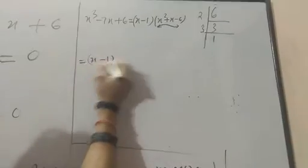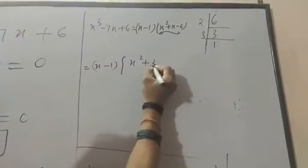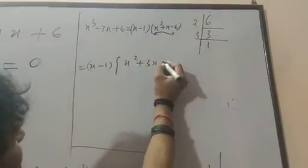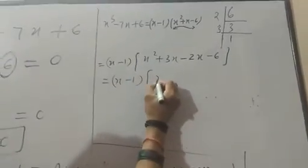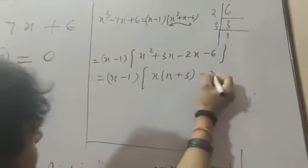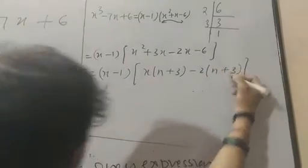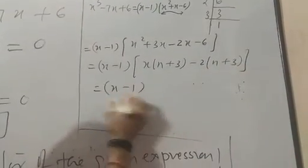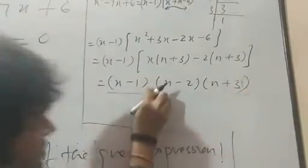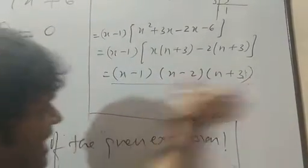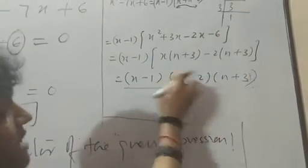Now factor this: x - 1, x² + x - 6. Make it 3x - 2x - 6. x - 1, bracket x common (x + 3), -2 common (x + 3). Final answer: (x - 1)(x - 2)(x + 3). This is your answer. No commas, no dots. Direct like this you will leave, without comma, without dot.